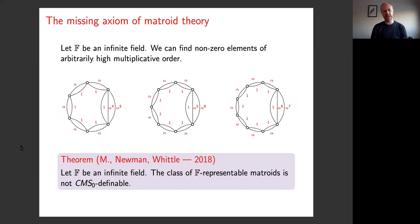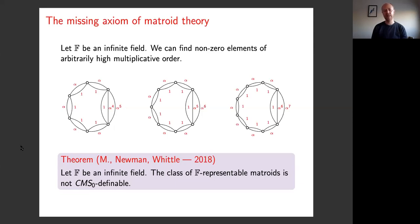That's what we did in the missing axiom theorem. We started with an infinite field — because the field is infinite, you can find elements in the multiplicative group of arbitrarily high order. We used those elements of arbitrarily high order to define an infinite sequence of matroids using gain graphs. The proof consisted of showing these matroids are pairwise inequivalent under the Myhill-Nerode type relation relative to the class of F-representable matroids: we took an arbitrary pair from the infinite sequence and showed we could glue on a matroid such that one resulting matroid is F-representable and the other is not. Therefore there are infinitely many equivalence classes, and therefore the class of F-representable matroids is not CMSO definable.